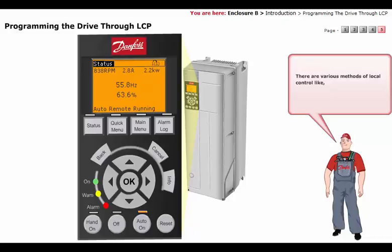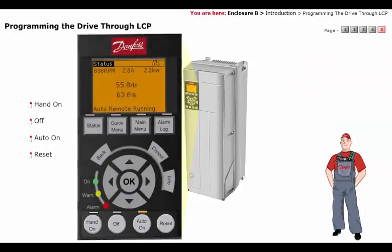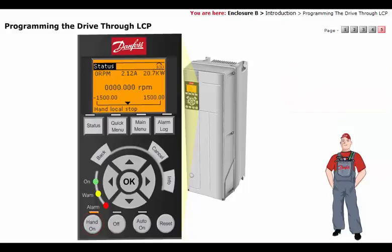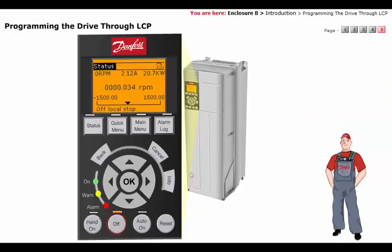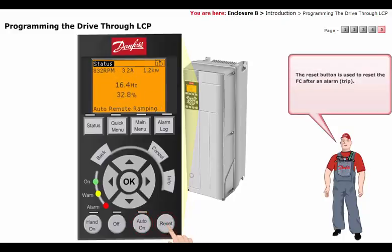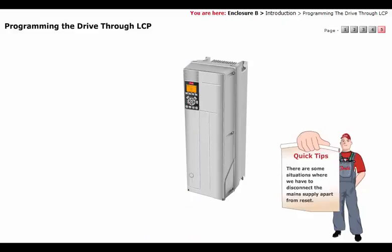There are various methods of local control like Hand On, Off, Auto On, and Reset. The Hand On button is used to start an application once the connections are made. The Off button is used for stopping the connected motor and hence the application. The Auto On button controls the frequency converter through the control terminals or serial communication. The Reset button is used to reset the frequency converter after an alarm trip. There are some situations where we have to disconnect the main supply apart from reset.